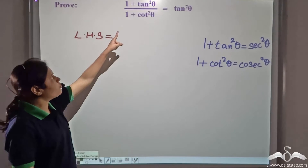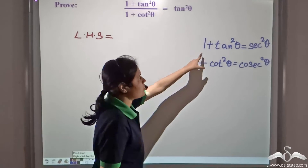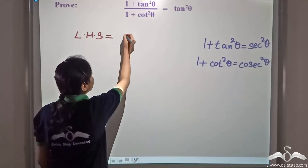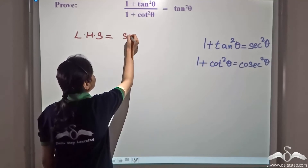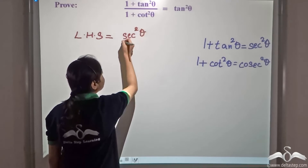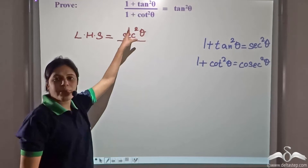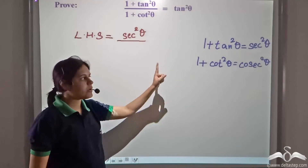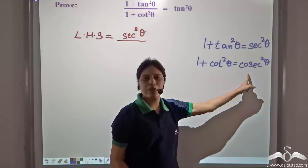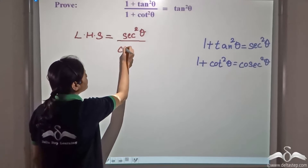In the numerator we have 1 + tan²θ, which becomes equal to sec²θ. And in the denominator we have 1 + cot²θ, which becomes equal to cosec²θ.